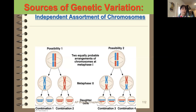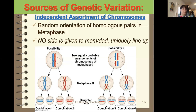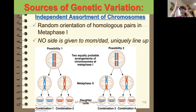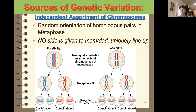The next way to get variation is independent assortment. When the homologues line up next to each other, there's not a mom's side and a dad's side — they line up independently. When you do a Punnett square, that's what you're seeing: big A comes here, little A goes there. They line up independently; it's all random, not organized by parent of origin.